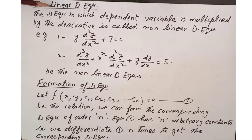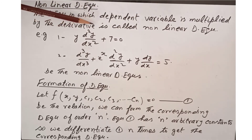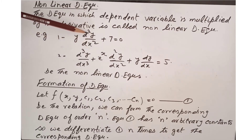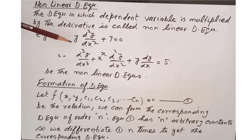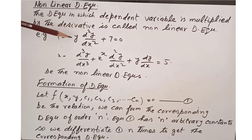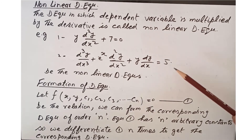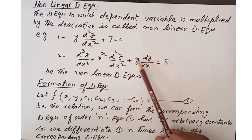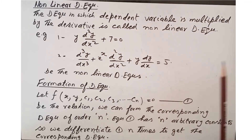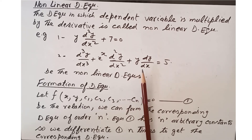Non-linear differential equations: a differential equation in which the dependent variable is multiplied by a derivative is called a non-linear differential equation. For example, if y is multiplied by d²y over dx², that term makes the equation non-linear. Another example: d³y over dx³ plus e^x d²y over dx² plus y dy over dx equals 5 is non-linear because of the term y times dy over dx, where the dependent variable y is multiplied by dy over dx.